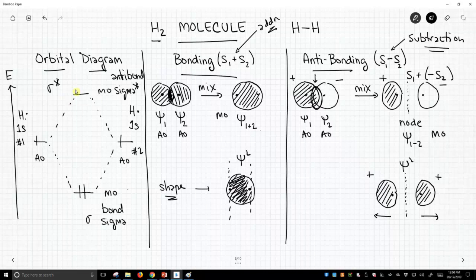We can draw pictorial representations that connect with our orbital diagram on the left, and this is how we treat bonding in molecules.